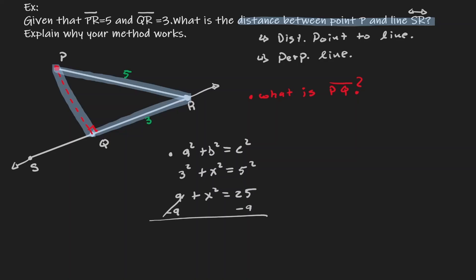Let's take away 9. So now we know that X squared is equals to 16. And to get rid of the square, take a square root. So X is equals to plus or minus 4.